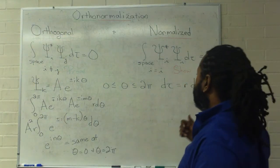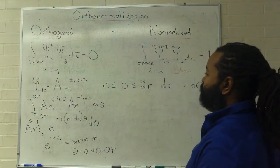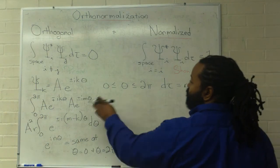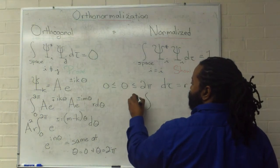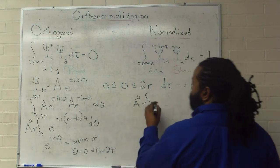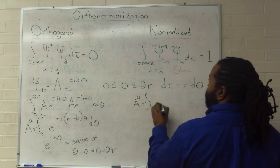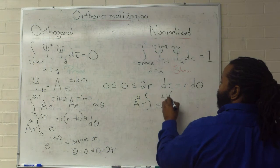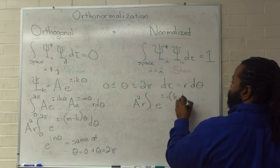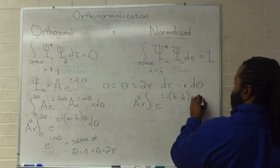The next part, then, is to show that this result will give us something that's normalized. So, I can use the same setup. Skipping a couple steps. a squared r pulls out. And I'm going to have e to the plus or minus i k minus k theta d theta.